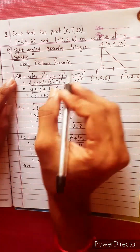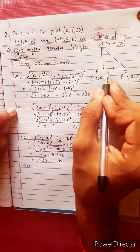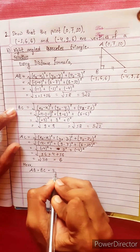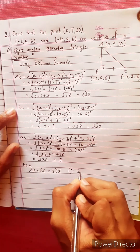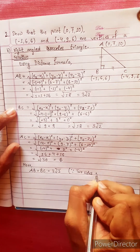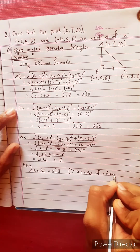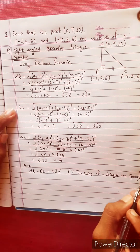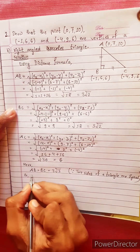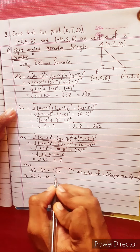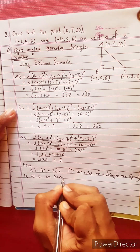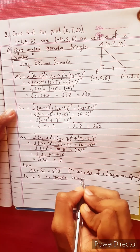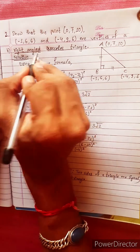AB is equal to 3√2. BC is equal to 3√2. Therefore AB equals BC equals 3√2. Two sides of the triangle are equal, so it is an isosceles triangle. This is also the right angle vertex.